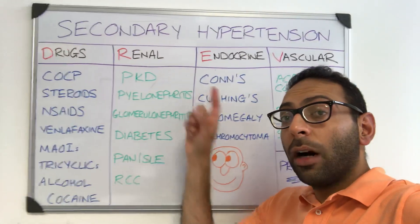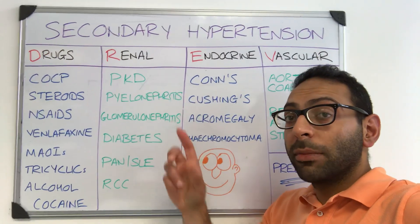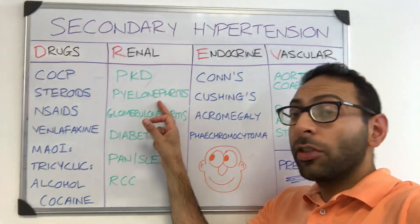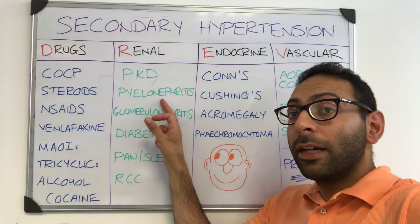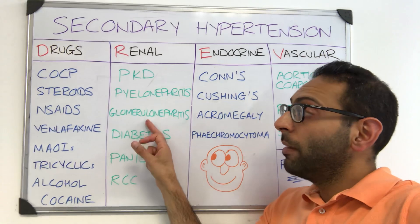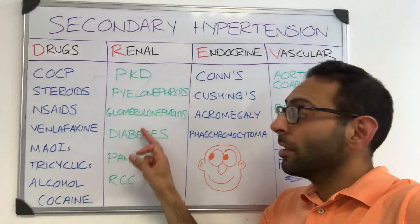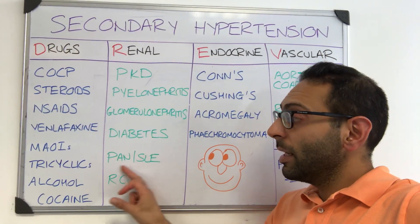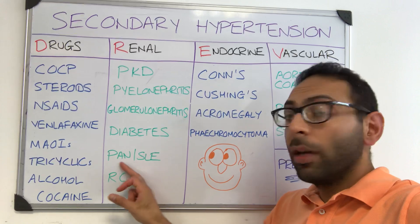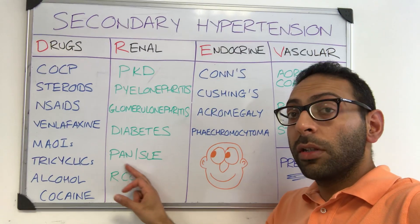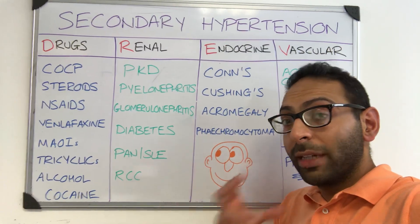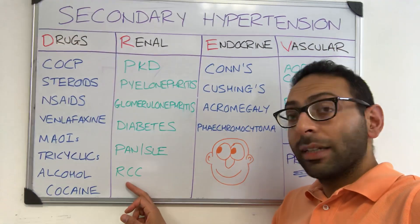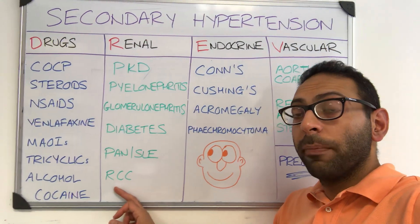Then R — renal. Some of the renal causes: polycystic kidney disease, infection, pyelonephritis, glomerulonephritis, diabetic renal disease, things like PAN or polyarteritis nodosa or SLE — so connective tissue disorders affecting the kidney. And don't forget renal cell carcinoma.